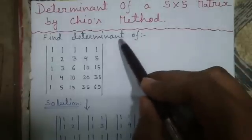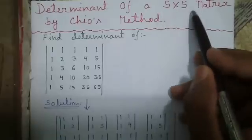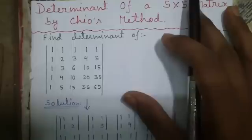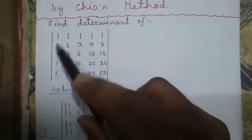In my previous video, I told you how to use Chiyo's method to find determinant of a 4 cross 4 matrix. Please watch that video along with this video to get the full flavor. Our question is find determinant of this 5 cross 5 matrix.